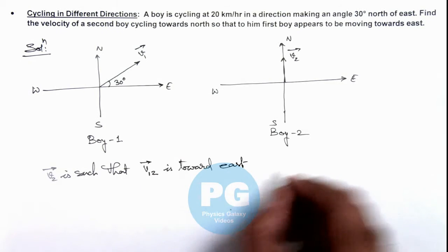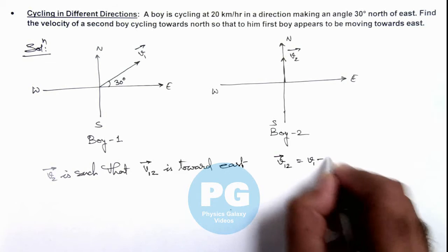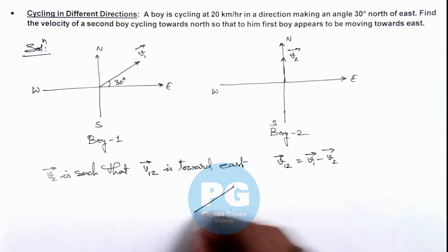So in this situation we can write velocity of 1 with respect to 2 will be written as v1 minus v2. And here, first velocity v1 is in this direction.